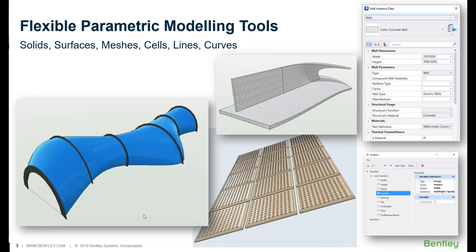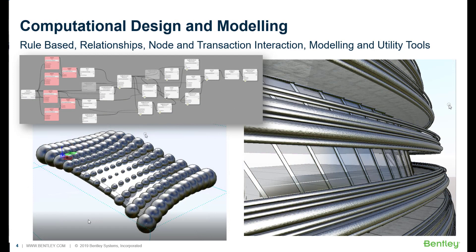If something is concrete, we can make it look like concrete and give it the attributes of concrete. These tools are also history-based — we can step back through the way these objects were made and make edits accordingly. For the real power, we come to our computational design and modeling techniques, which use a node and transaction-based system to allow us to create rule-based logic and relationships between objects and other input parameters. As you can see, the end results can be quite amazing.